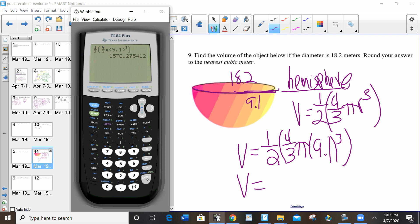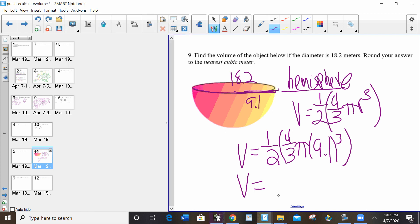To the nearest cubic meter, 1578 cubic meters. So if it's ever half of a shape or even you can see quarter of a shape, you can see any fraction of a shape. Half comes up the most. Half of a shape you just put a half in front of the formula.